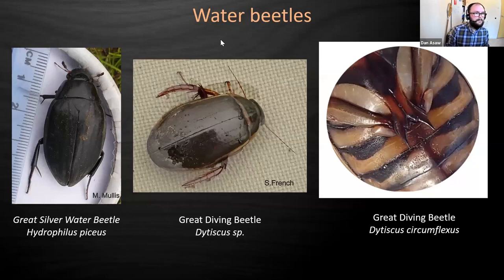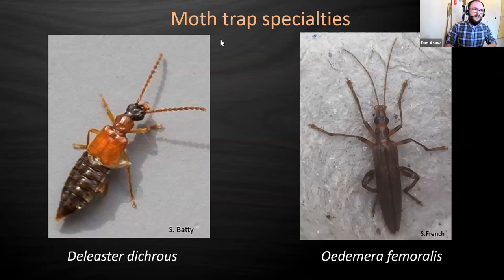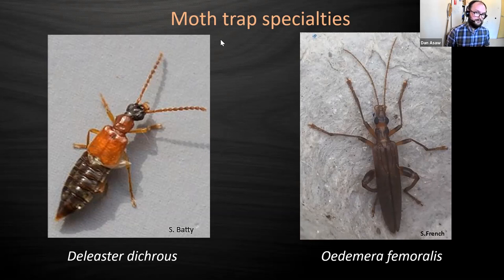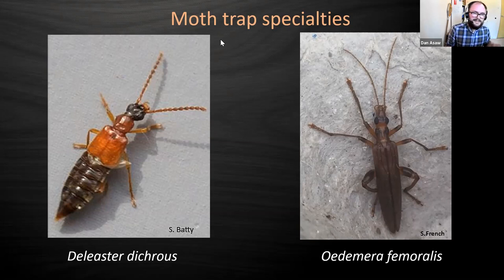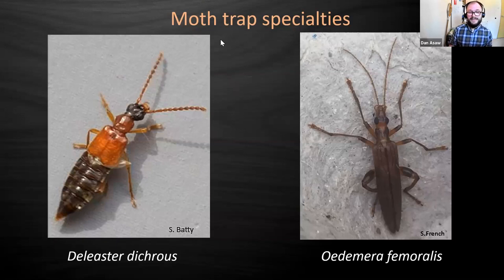These are species where quite a lot of their distribution data actually comes from moth traps, highlighting that moth trap data can be really, really important. The one on the left, Lordithon dichrous, is a rove beetle - and it's a miracle because it's a rove beetle that's incredibly easy to identify. It's got a nice red colour and shorter wing cases. The one on the right is Oedemera virescens, related to the swollen-thighed flower beetles. It's got a duck-bill shaped head that clinches identification - there's nothing on the UK list that looks anything like it.